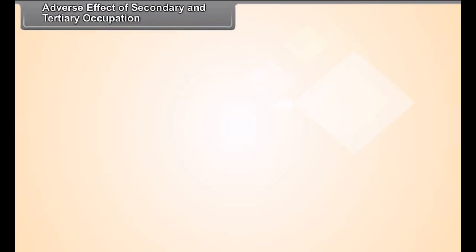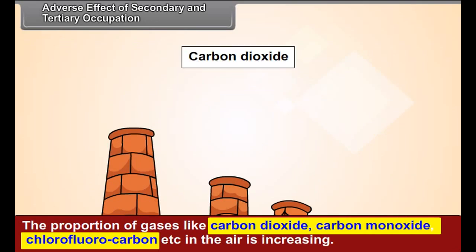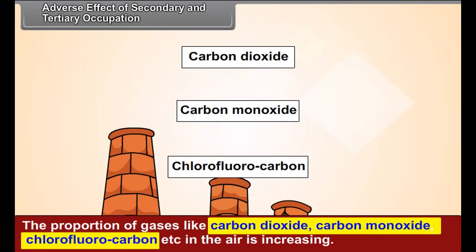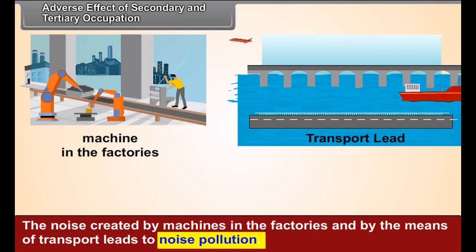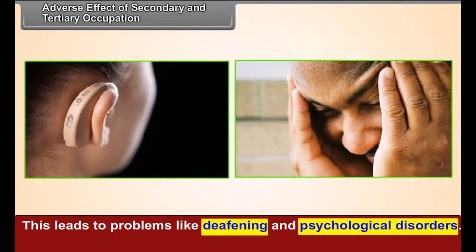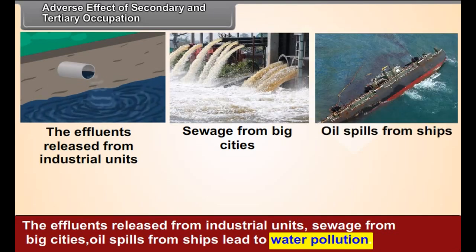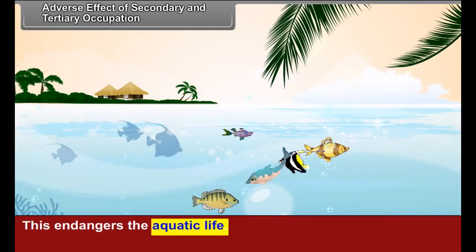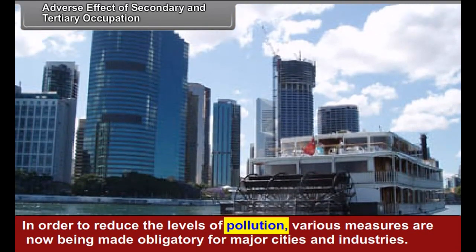Adverse effects of secondary and tertiary occupations: Industries and various means of transport give rise to problems of pollution of air, water and noise. The proportion of gases like carbon dioxide, carbon monoxide, chlorofluorocarbon, etc. in the air is increasing, and it has adverse effects on human life. The noise created by machines in factories and by means of transport leads to noise pollution, causing problems like deafening and psychological disorders. Effluents released from industrial units, sewage from big cities, and oil spills from ships lead to water pollution, endangering aquatic life. In order to reduce pollution levels, various measures are now being made obligatory for major cities and industries. It is necessary to create awareness in society about pollution and its ill effects.